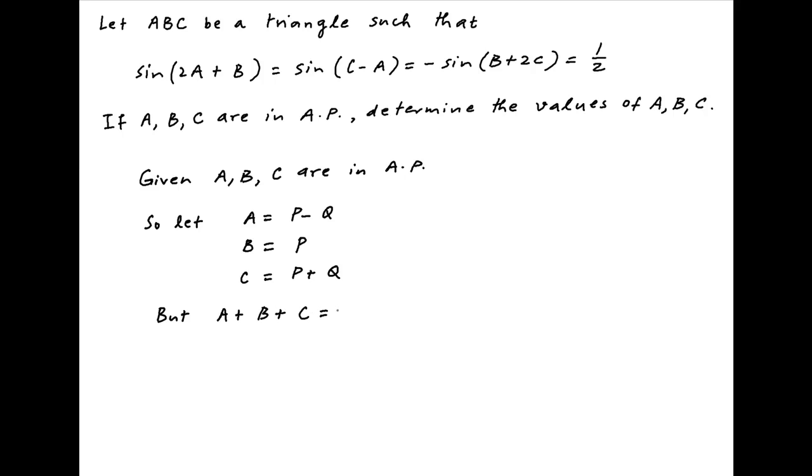Now A, B, C are angles of a triangle, so the sum of A, B, and C is equal to π. Substituting the values of A, B, and C assumed above, we get P minus Q plus P plus P plus Q is equal to π.